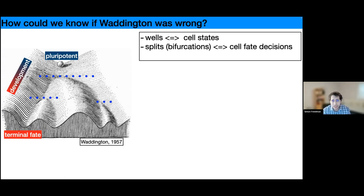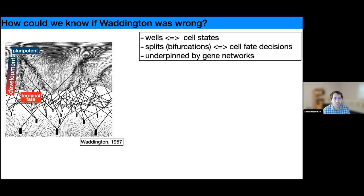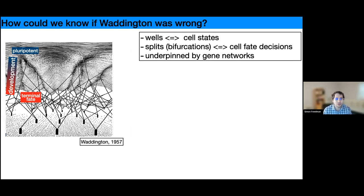This wasn't the only picture Waddington drew. He also drew one showing that the splits along this landscape are underpinned by gene networks, which are driving these decisions.